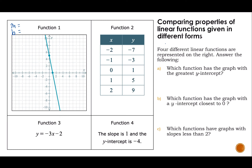Let's take a look at function one. This one is given graphically. My slope is rise over run — I'm going down five over one, so that slope is negative five over one, which is just negative five. And my y-intercept appears to be five.